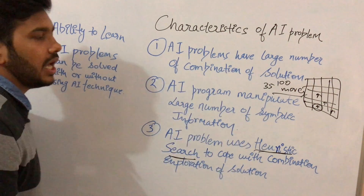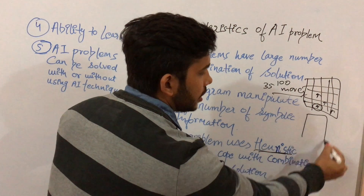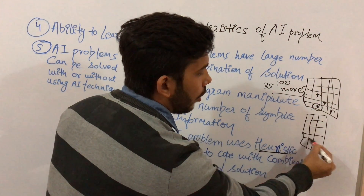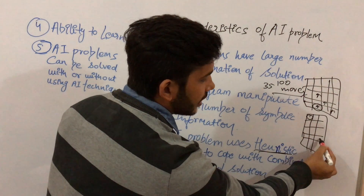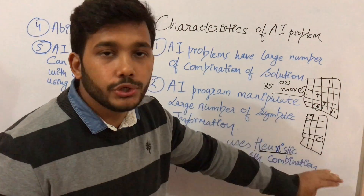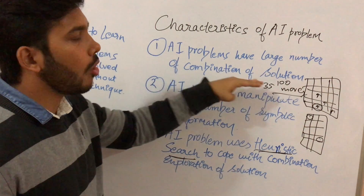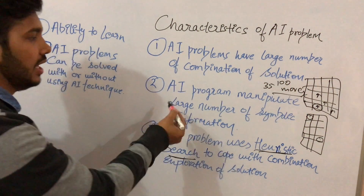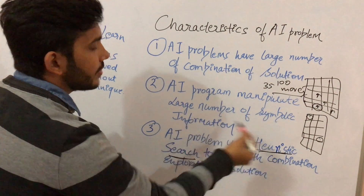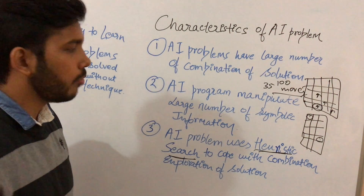Just like when you play a game — suppose you are playing Sudoku — from a particular position, what number can come next? There are a large number of possible solutions. So, an artificial intelligence problem has a large combination of solutions.